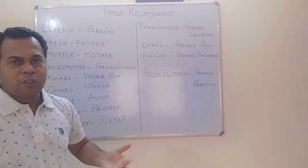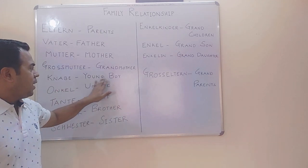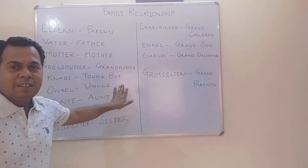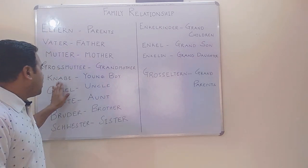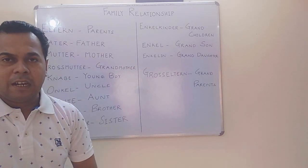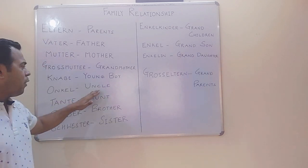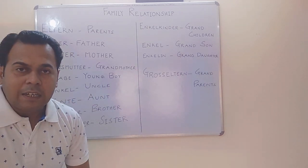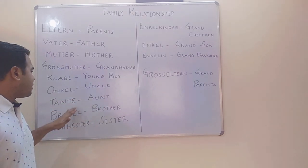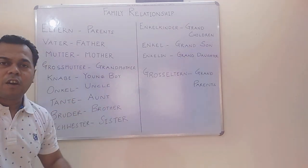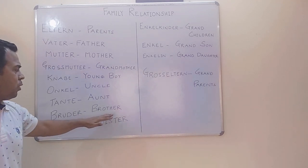Next, Knabe — Knabe means young boy. For a young boy we say Knabe. Here K is silent, so you have to call it Knabe. Knabe is for young boy. Next, Onkel — Onkel is for uncle. So we say Onkel. Next, Tante — Tante is for aunt.